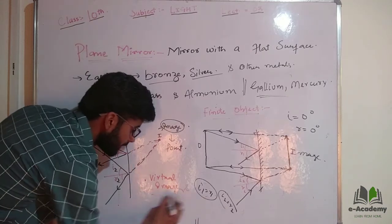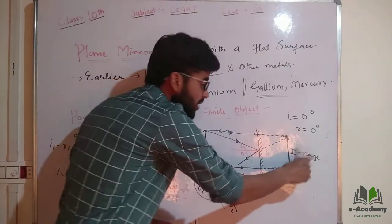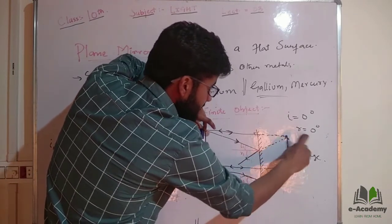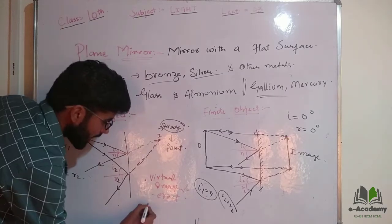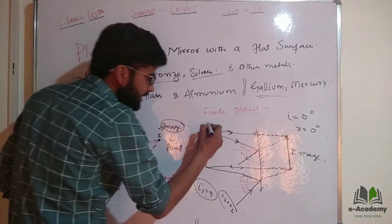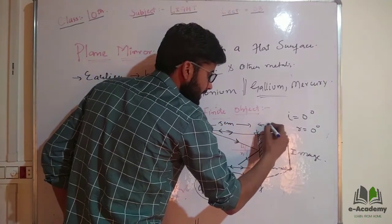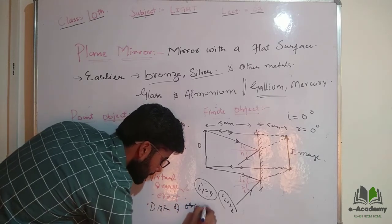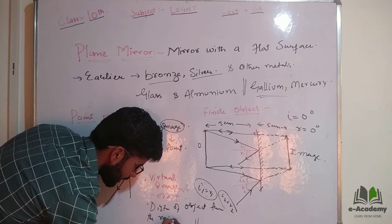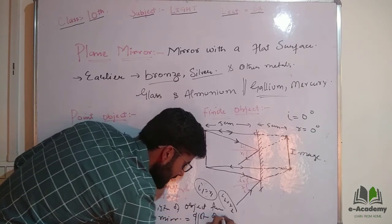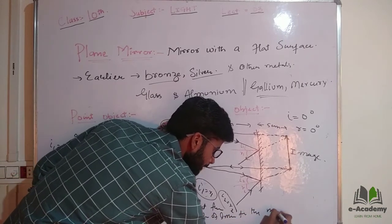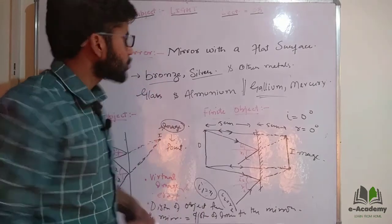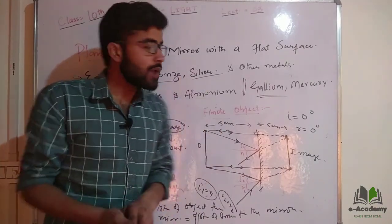So the first characteristic is that the image is a virtual image. The second point is that the image is erect — it is not inverted. For example, if my object is upright, then my image will also be upright. The third point: if the object is at a distance of 5 cm from the mirror, the image will also be at a distance of 5 cm behind the mirror. So the distance of the object from the mirror will be equal to the distance of the image from the mirror. The object is in front of the mirror and the image is behind the mirror. So this was all about the plane mirror; in the next lecture we will study about spherical mirrors.